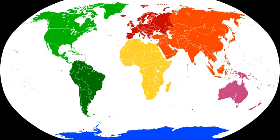The border between North America and South America is at some point on the Isthmus of Panama. The most common demarcation in atlases and other sources follows the Darién Mountains watershed divide along the Colombia-Panama border where the isthmus meets the South American continent. Virtually all atlases list Panama as a state falling entirely within North America and/or Central America.